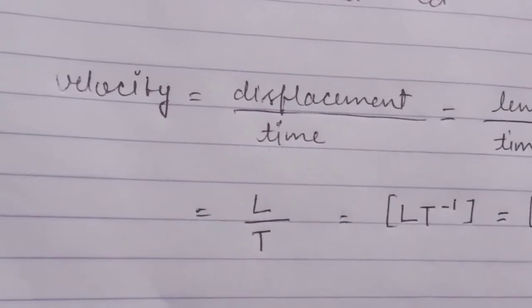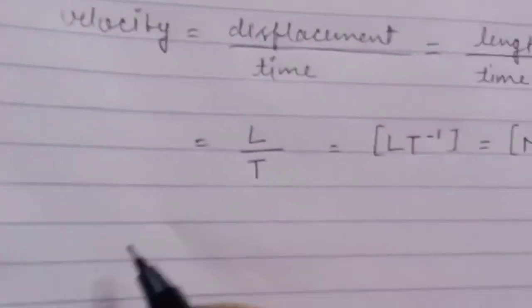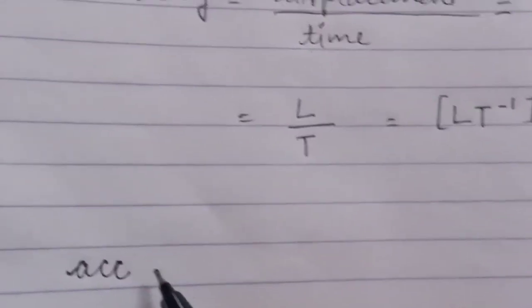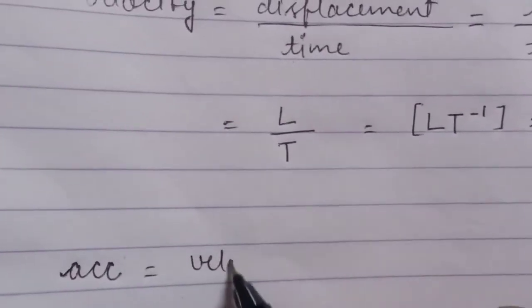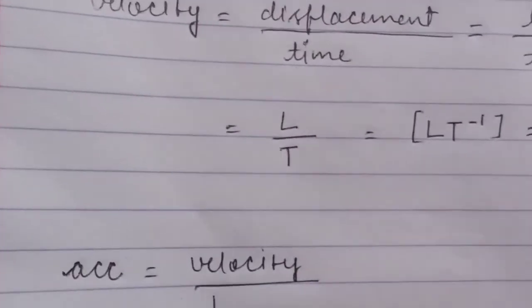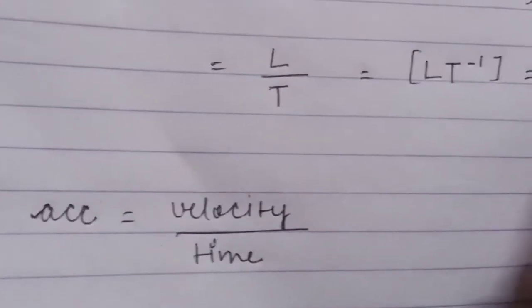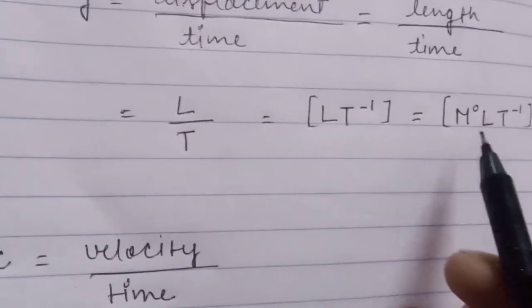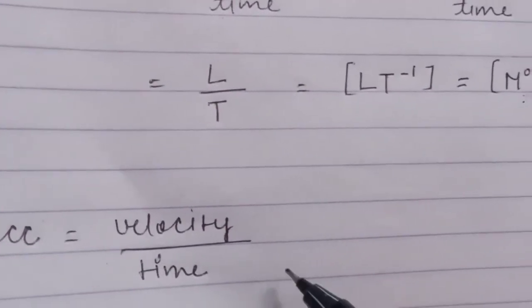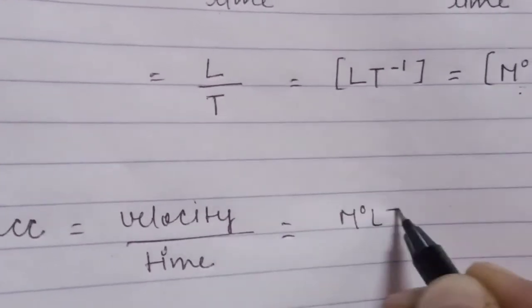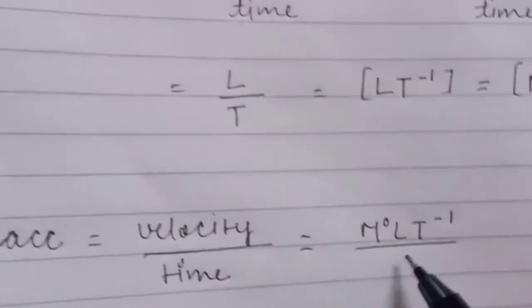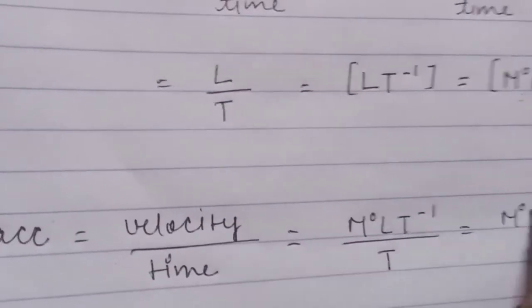Now let's find the dimensional formula for acceleration. Acceleration equals velocity upon time. We already found the dimensional formula for velocity: M⁰ L T⁻¹. Dividing by T gives us M⁰ L T⁻².